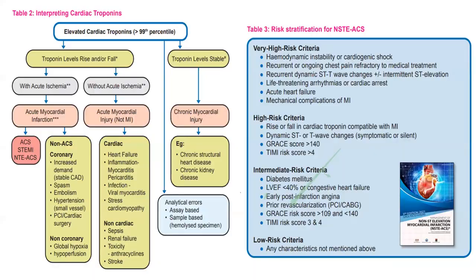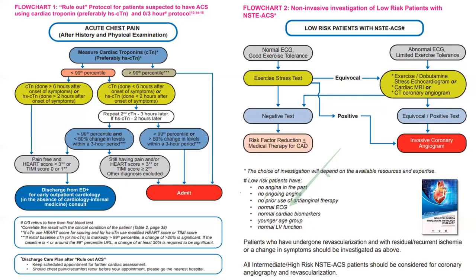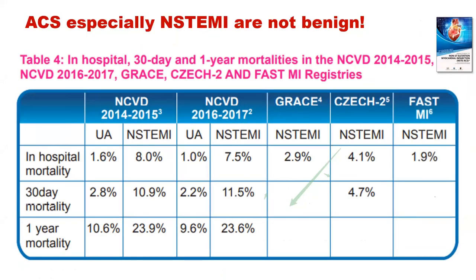Remember the troponins — it's a rise and fall pattern, but high-sensitivity troponin is now very sensitive. Even a small leak can be detected, and the finding carries a very bad risk profile. For acute chest pain, low-risk patients can do a stress test if ECG changes are not obvious. If still equivocal, an invasive angiogram may still be needed, because having a heart attack is no joke. Even non-STEMI and unstable angina are not benign.